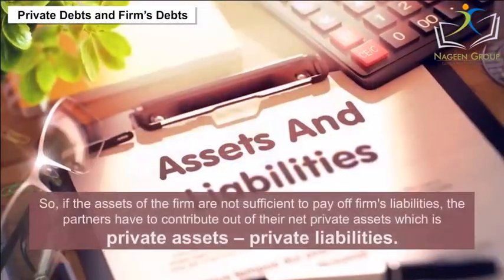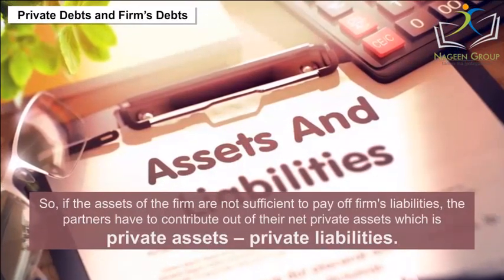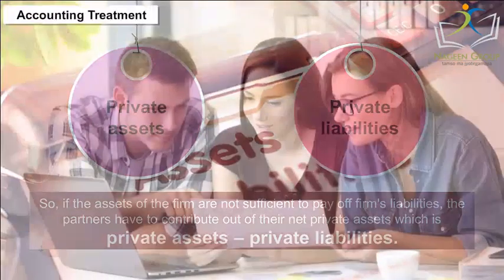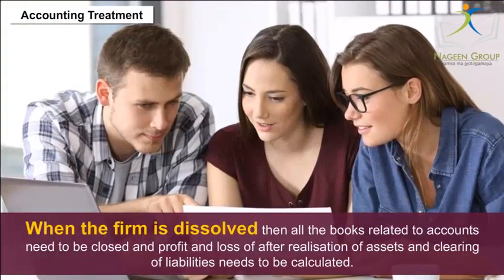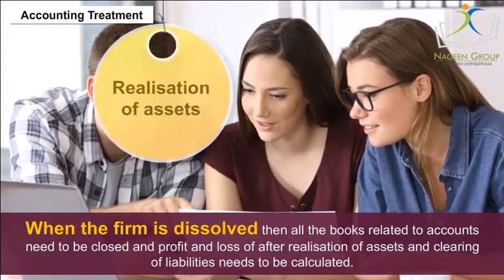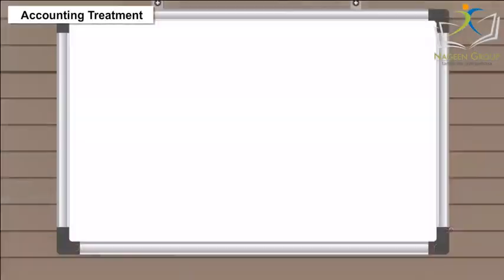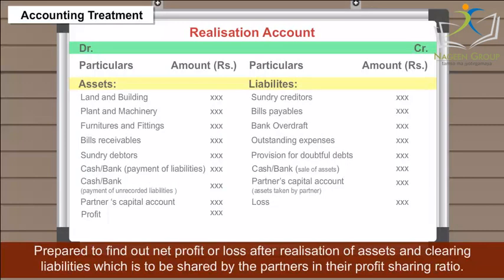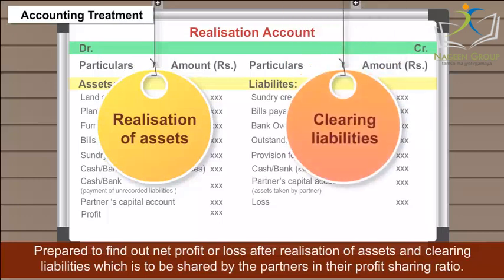It is to be noted that the private property of the partner does not include the personal property of his wife and children. So if the assets of the firm are not sufficient to pay off firm's liabilities, the partners have to contribute out of their net private assets, which is private assets minus private liabilities. When the firm is dissolved, all books related to accounts need to be closed, and profit and loss after realization of assets and clearing of liabilities needs to be calculated. A realization account is prepared to find out net profit or loss, which is shared by the partners in their profit-sharing ratio.